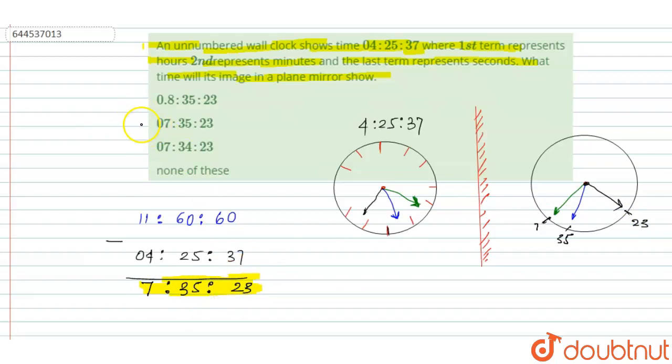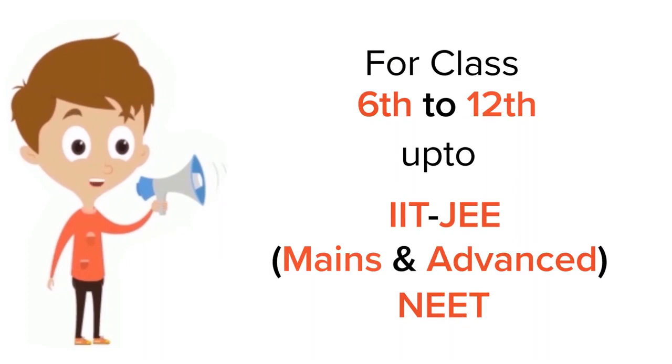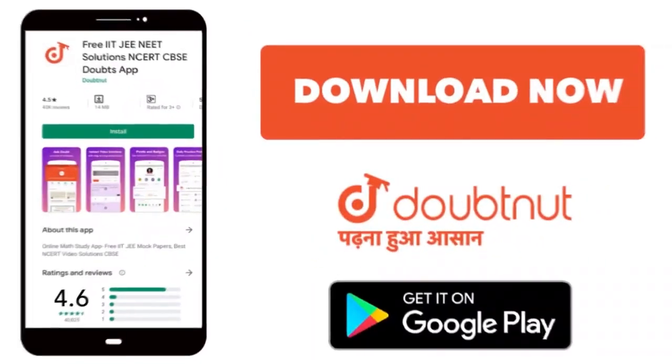And when we see the option, then option B is the right answer. Thank you. For class 6 to 12, IIT JEE and NEET level, trusted by more than 5 crore students, download Doubtnut today.